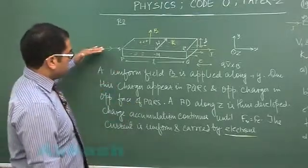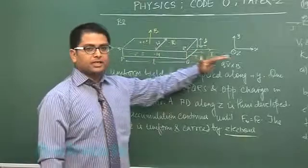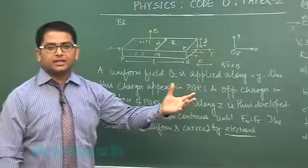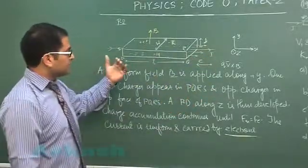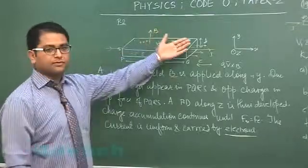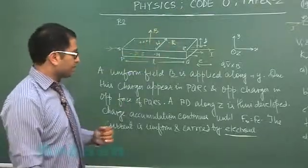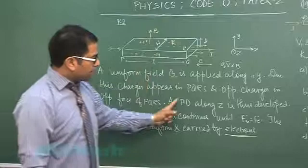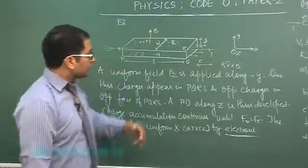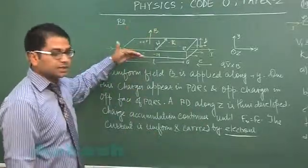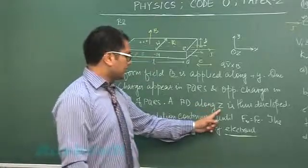So what happened? The current was flowing, suddenly we applied magnetic field that drifted the charges, and the front face and the back face will have opposite charges. And then a PD along Z is thus developed. You could see in this direction the potential difference would be developed.